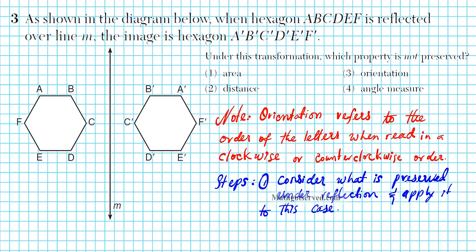All right, let's take a look at problem 3. It reads: as shown in the diagram below, when hexagon ABCDEF is reflected over line M, the image is hexagon A prime, B prime, C prime, D prime, E prime, F prime. Under this transformation, which property is not preserved? You want to be careful — this is asking for which property is NOT preserved.